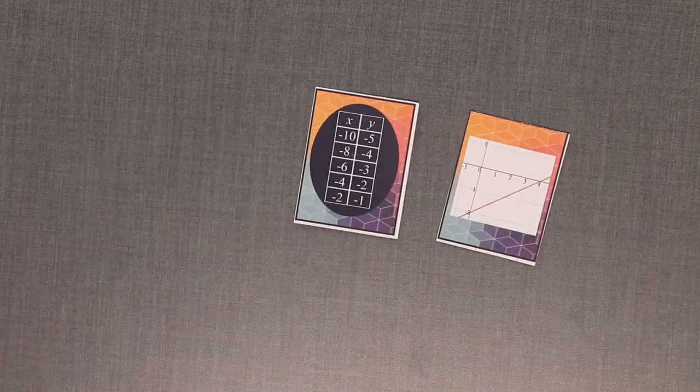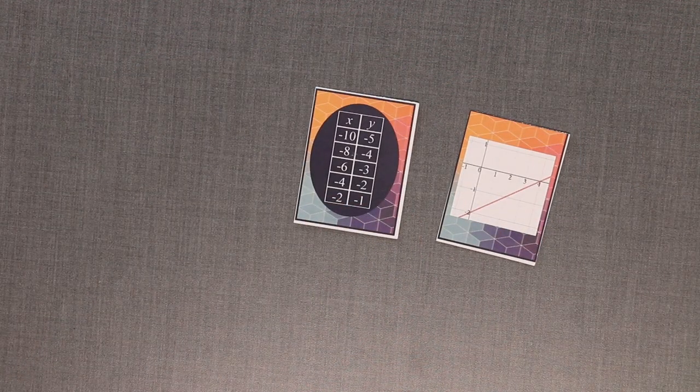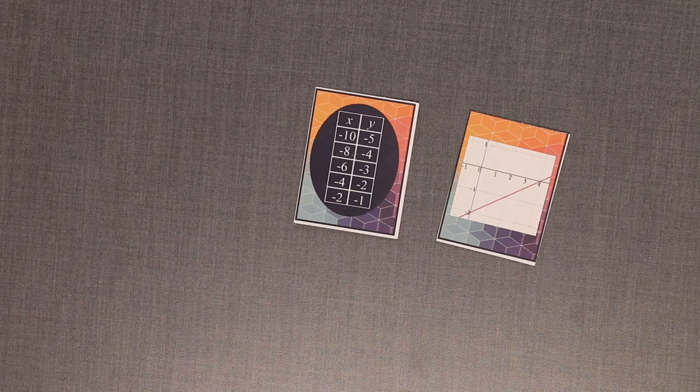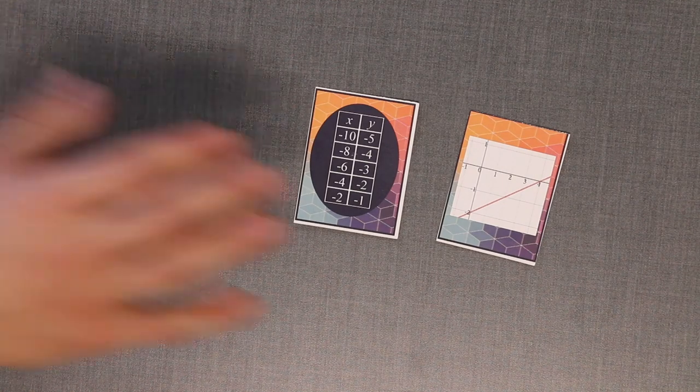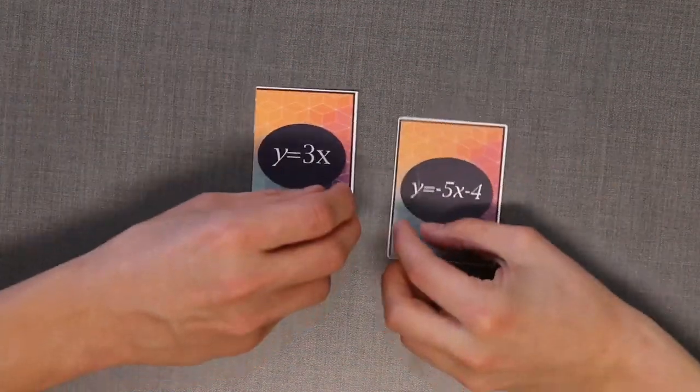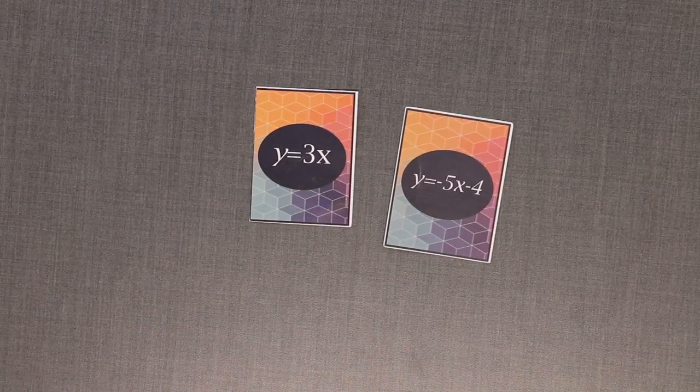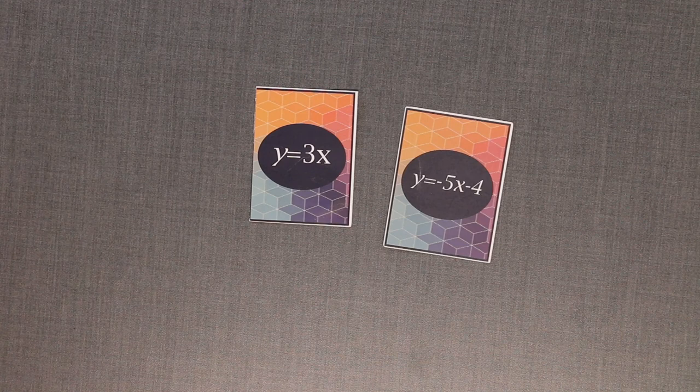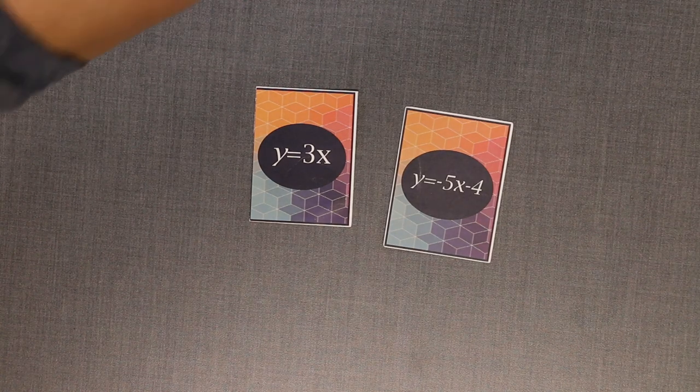The player on the left would see that their y-intercept is going to be 0, but the player on the right's y-intercept is going to be negative 2. So they would call y-intercept and get the cards. The player on the left would see that their slope is 3, while the player on the right's slope is negative 5. So they could call slope and win the cards for this round also.